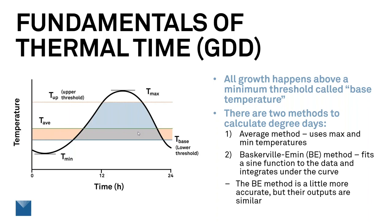Now I actually make measurements every 15 minutes out in the field, or we certainly can do better than that. You could also integrate under that curve if you wanted to, and of course that would give you more accuracy in your degree day. These two methods are both out there. The Baskerville-Emond method is a little bit better and more accurate, but their outputs are fairly similar, and I've done these calculations across several different data sets.